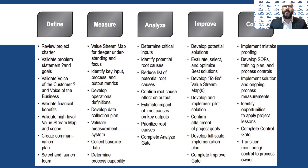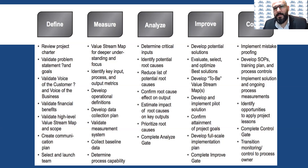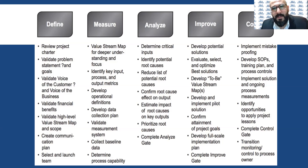Then move to the third phase: Analyze. Determine critical inputs and identify potential root causes. Look deep into the data to find where the root causes of problems are. You can use the 80/20 rule or the Pareto chart to focus on only 20 percent of problems — remember, that 20 percent will lead to 80 percent of process improvement. Prioritize the root causes and determine which one to address first.